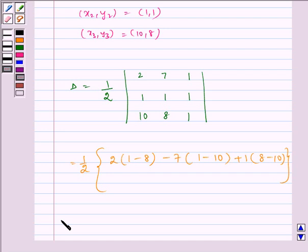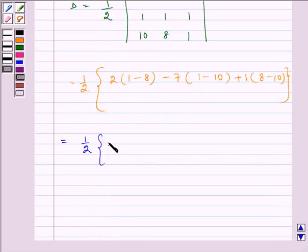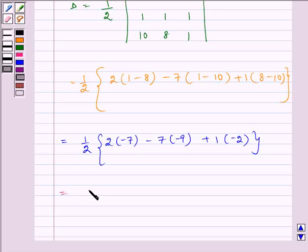which is equal to 1/2 times [2(-7) - 7(-9) + 1(-2)] which is equal to 1/2 times [-14 + 63 - 2]